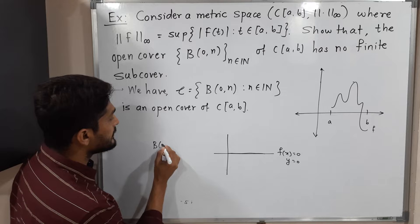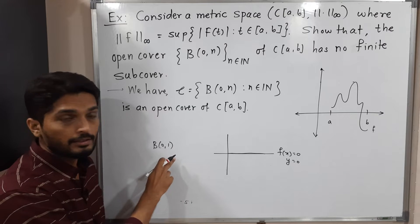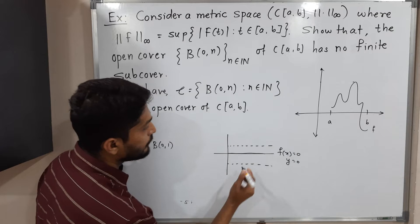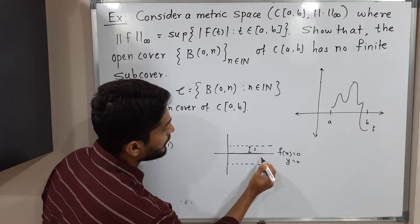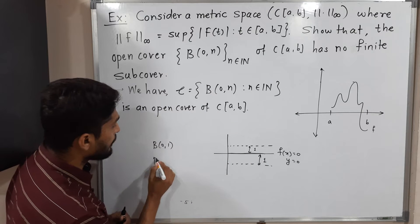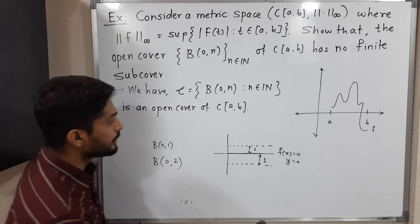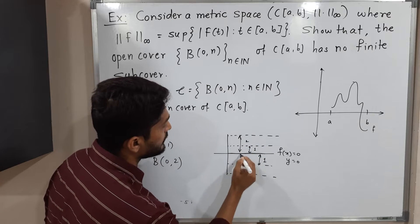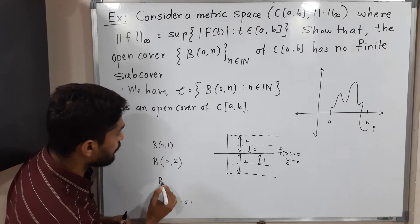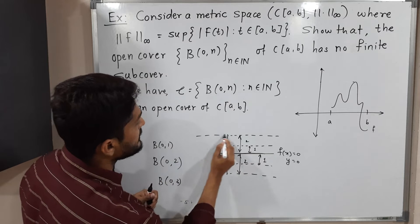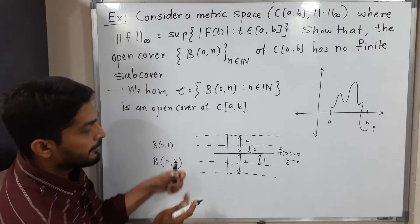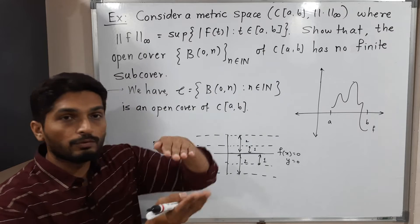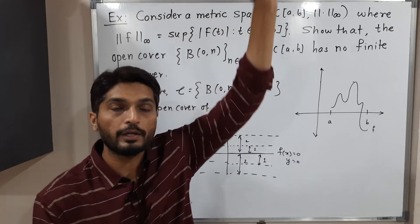For ball B(0, 1) we have a strip of distance 1 on each side. For B(0, 2) we have a strip of distance 2, and for B(0, 3) a strip of distance 3, and so on. So we have infinitely many such strips. Since all functions are defined on closed interval [A,B], we restrict these strips to that interval.